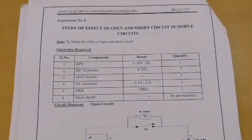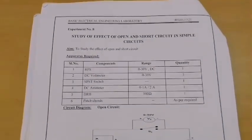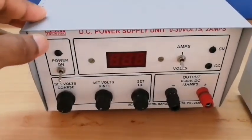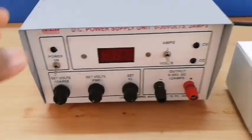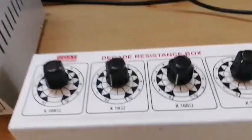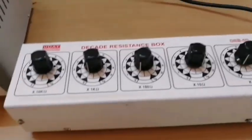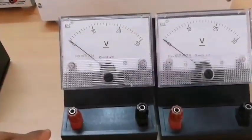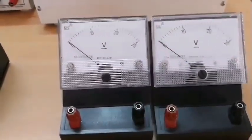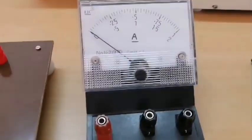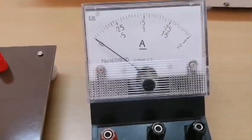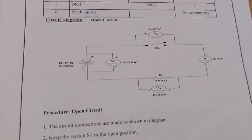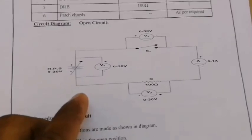Hello everyone. Now I am going to explain: study the effect of open and short circuit. For this experiment we need an RPS 0 to 30 volt, a decade resistance box (DRB), 2 voltmeters with range from 0 to 30 volts, an ammeter 0 to 1 amp, and one switch. Now see the circuit clearly.